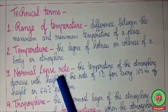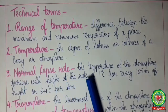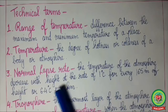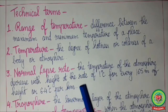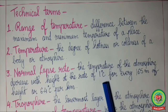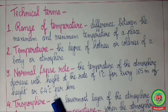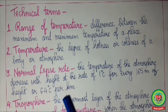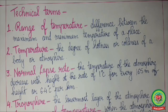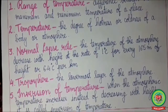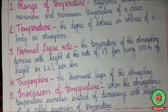Normal lapse rate, which we have discussed earlier: the temperature of the atmosphere decreases with height at the rate of 1 degree Celsius for every 165 meters of height, or by 6.4 degrees Celsius per kilometer. Troposphere: the lowermost layer of the atmosphere is called the troposphere.